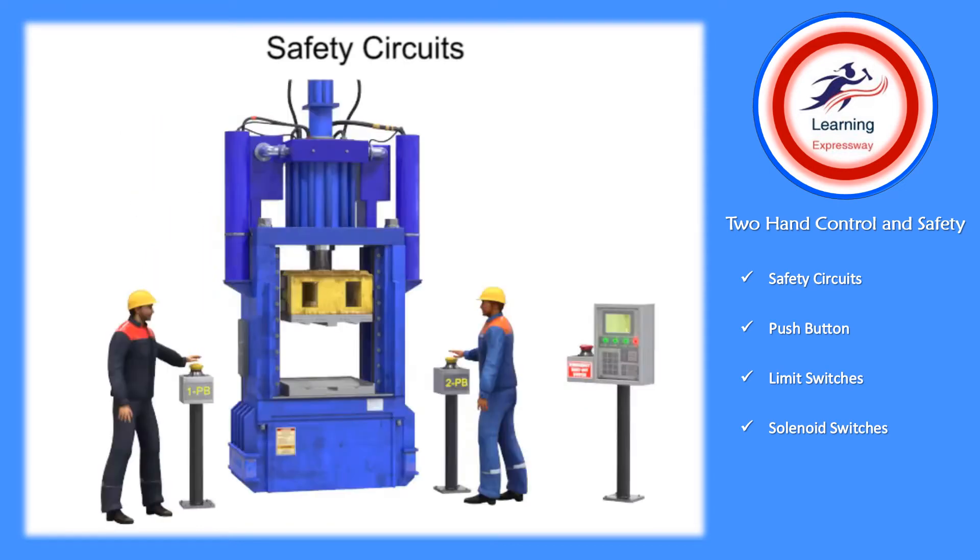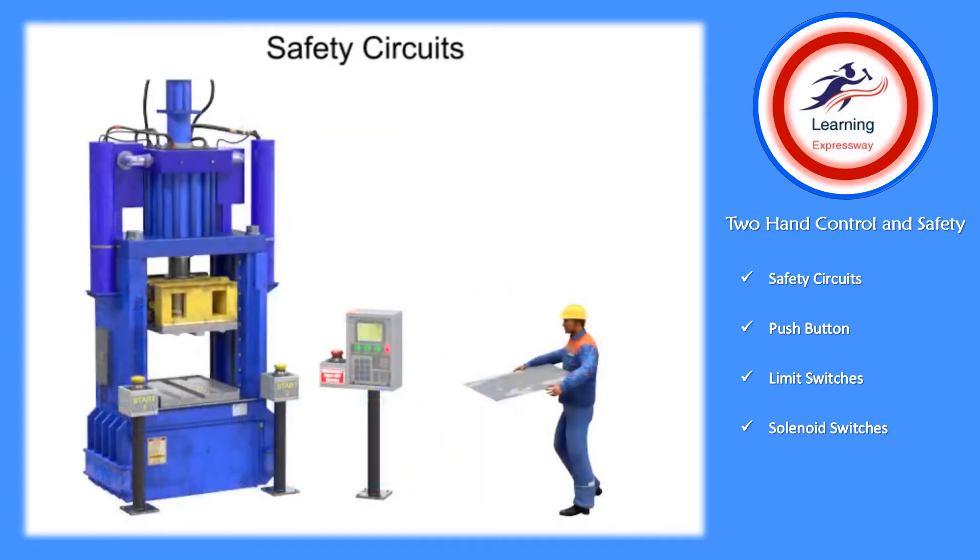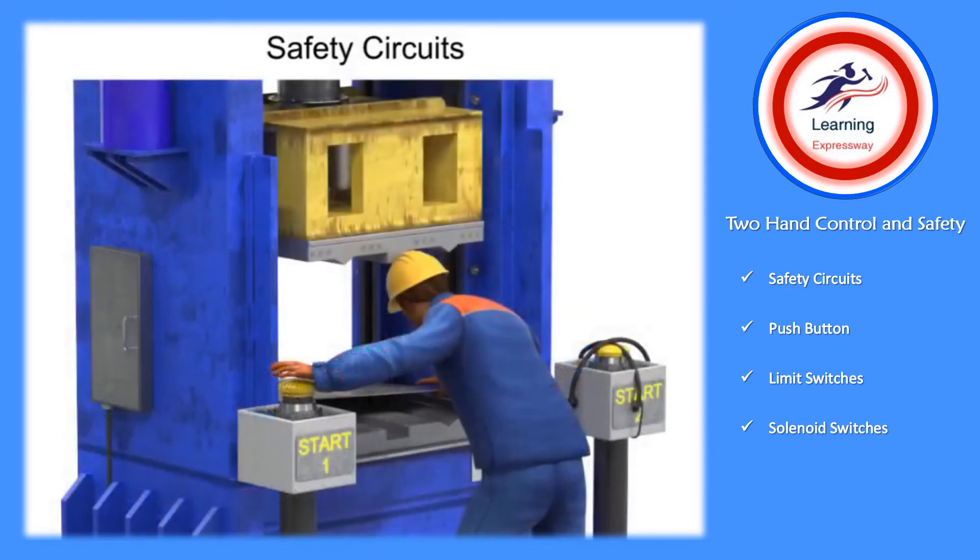While two-hand controls wired in series is ideal for machines with two operators, it becomes unsafe when only one operator is present. Although two buttons are still required, it becomes much easier for a single operator to tie or weigh down one button, allowing unsafe operation.